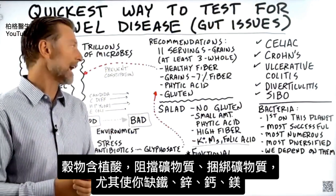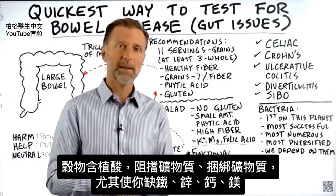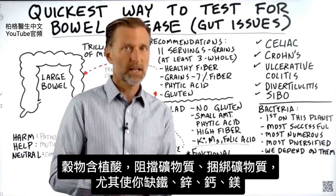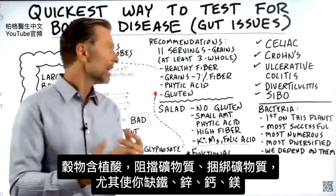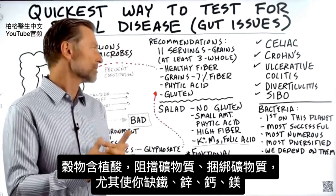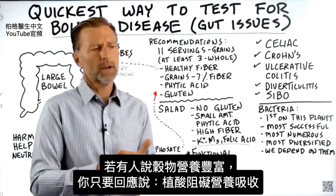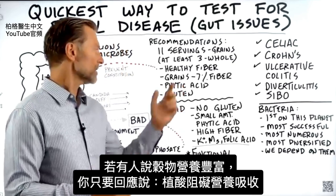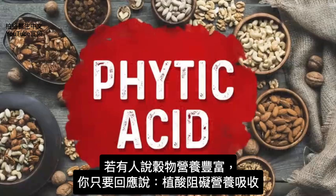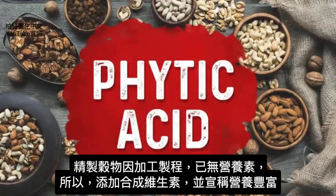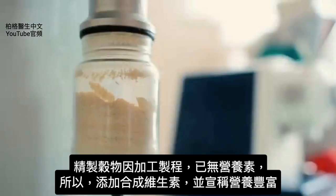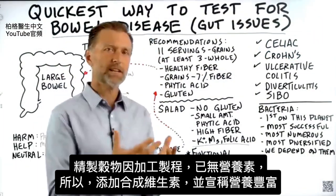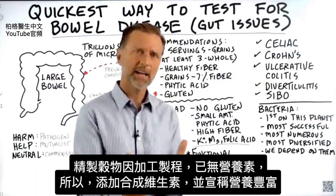Whole grains also have phytic acid, which blocks minerals — specifically iron, zinc, calcium, and magnesium. It tightly binds minerals. So if anyone tells you grains are nutrient-dense, bring up phytic acid. That blocks the nutrition in whole grains. And in refined grains, there is hardly any nutrition because they're refining it. That's why they have to fortify or enrich grains with a couple of synthetic vitamins and then call it nutrient-dense food.